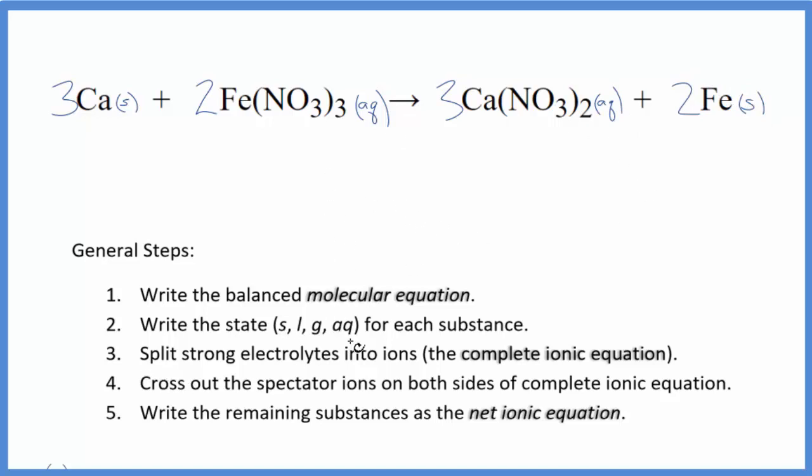Next, we split the strong electrolytes into their ions for the complete ionic equation. Calcium, that's a metal, so we just have it by itself. Three Ca. I'll write the states later. Let's not do that now.